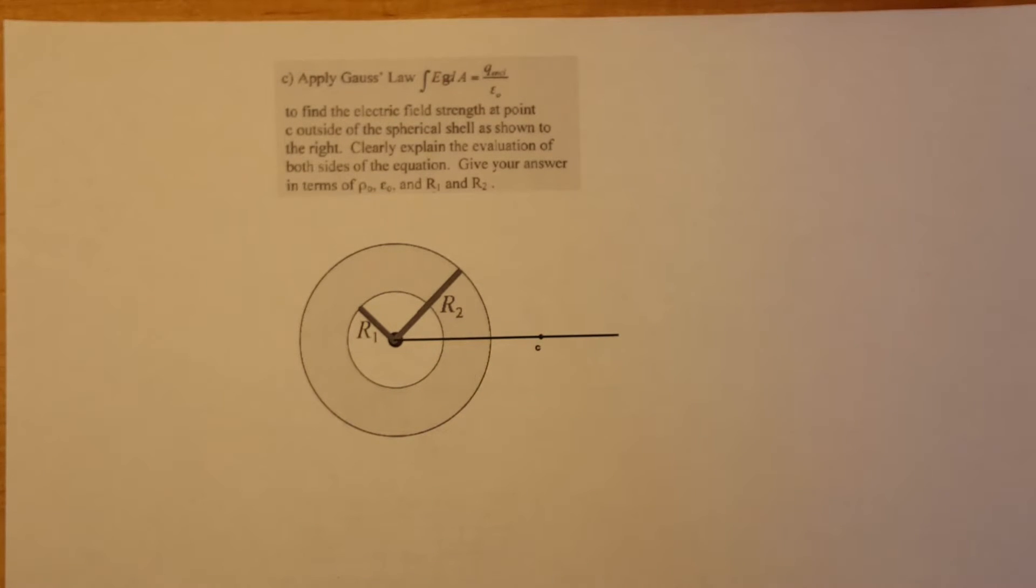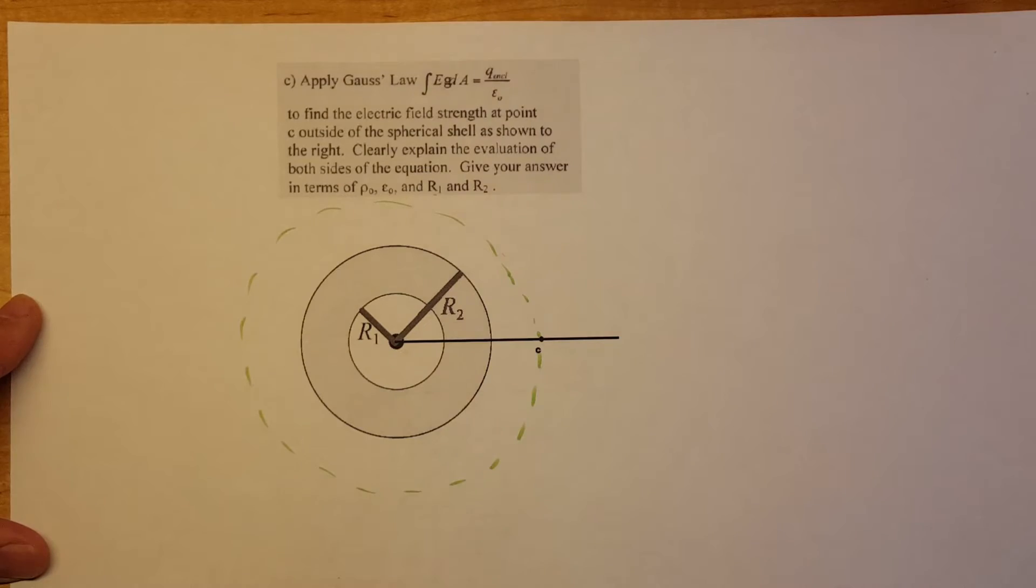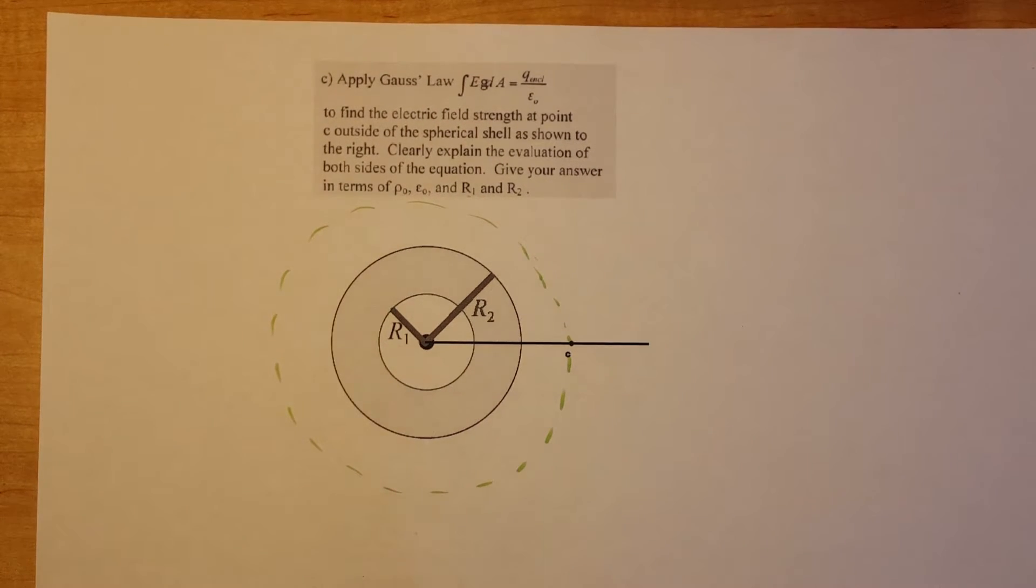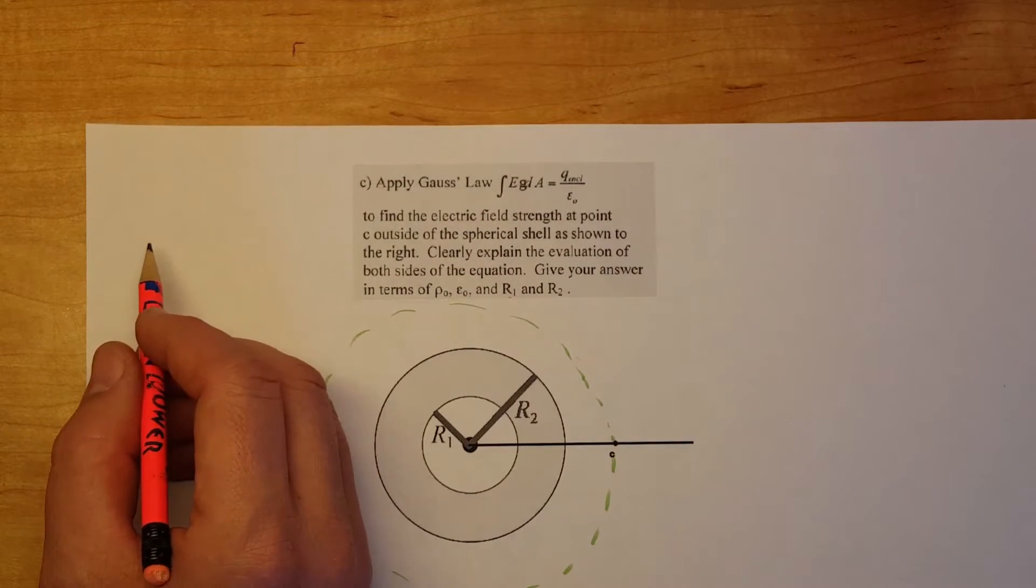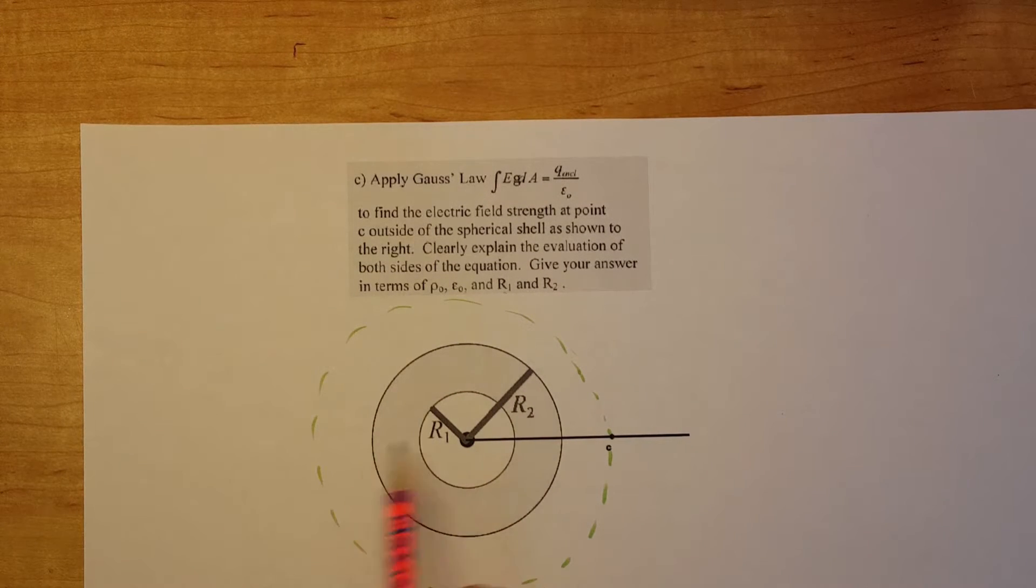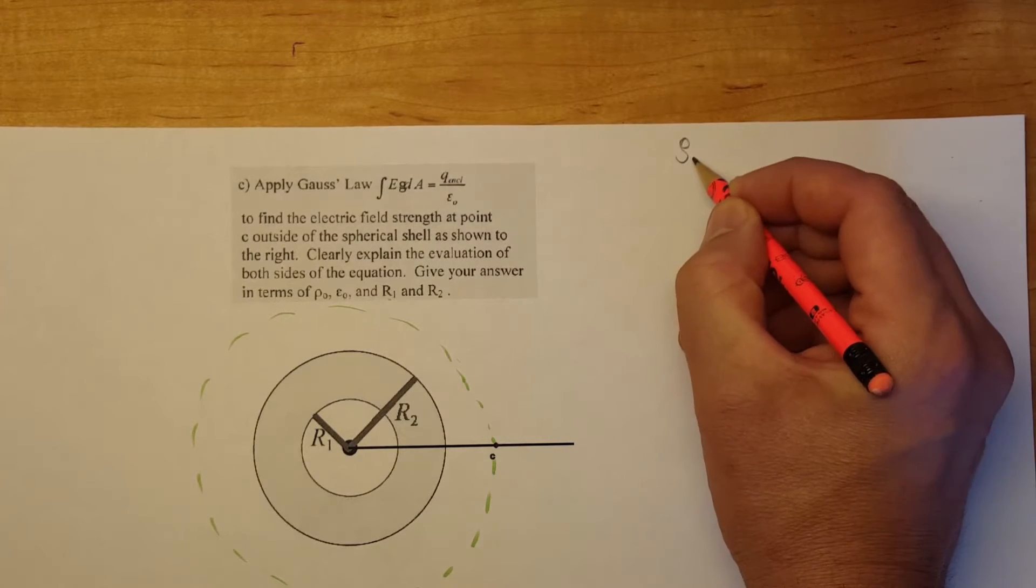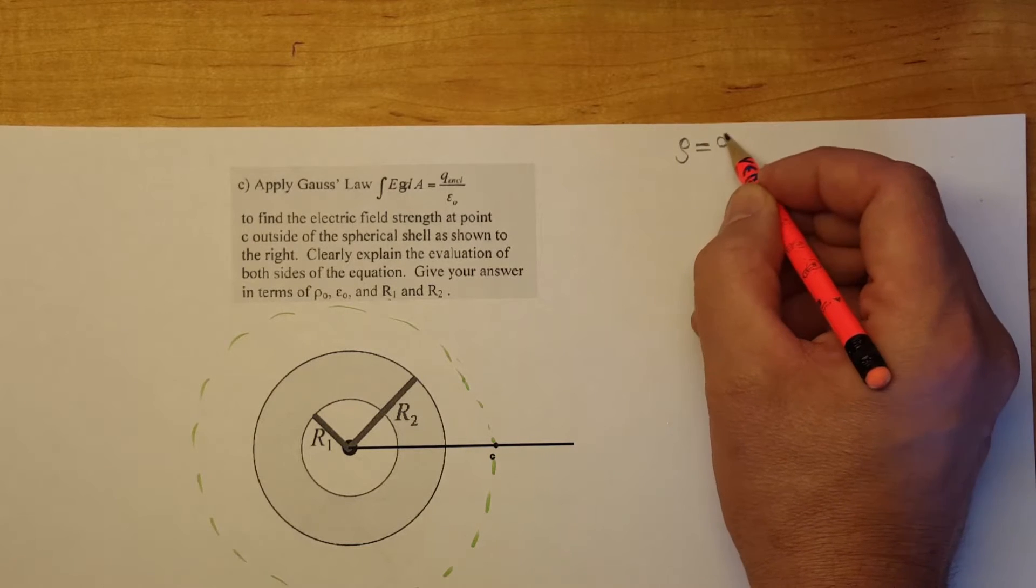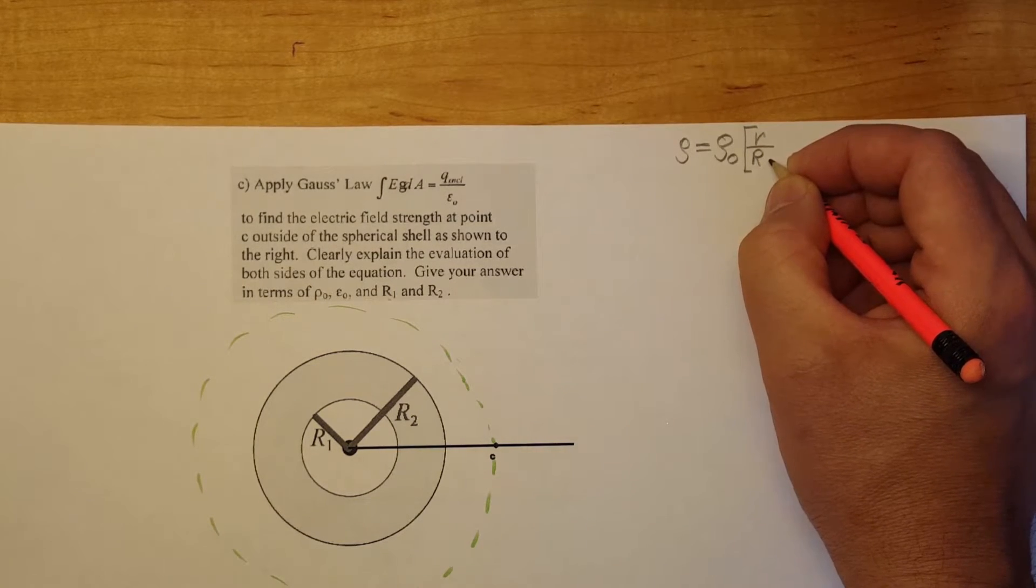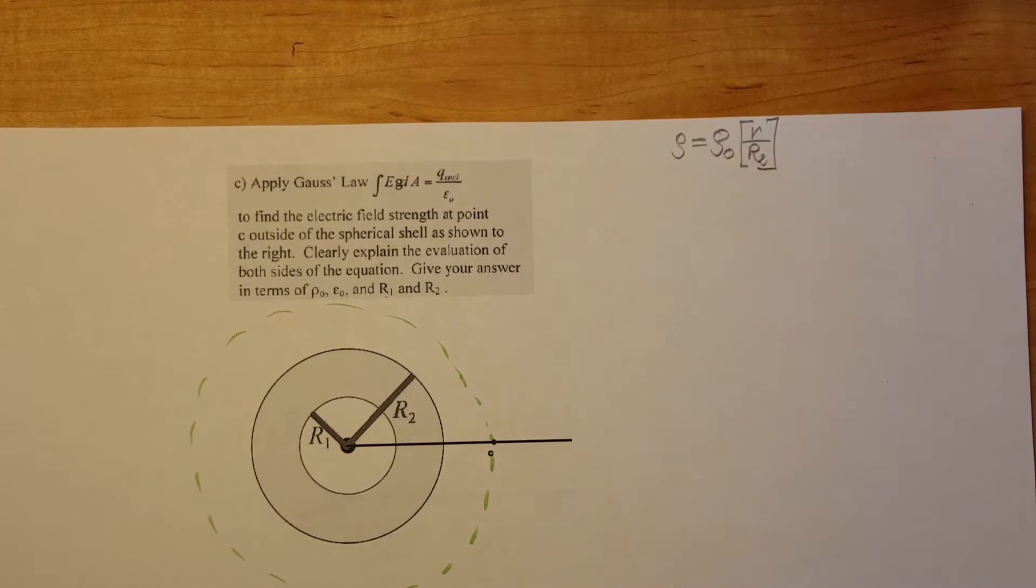We're going to start by applying and drawing our Gaussian surface which will be a nice symmetric sphere around our material. We're going to start by writing Gauss's formula. By the way in these three problems, our density varies. It changes. It's not constant inside the material and we had a formula given for it. I'm going to write it over here just so you can have it handy. Rho equals Rho naught times R over big R plus 2. This is our varying charge density.